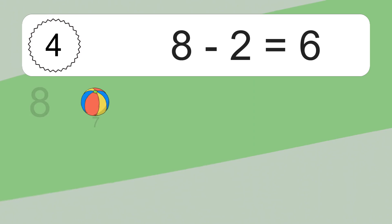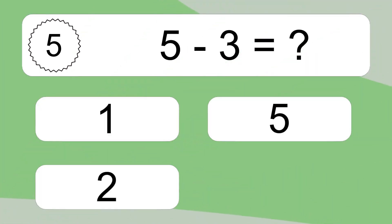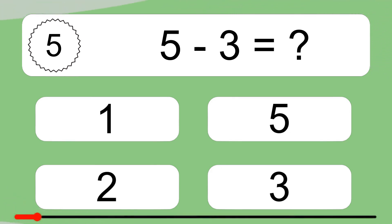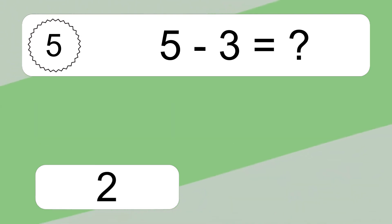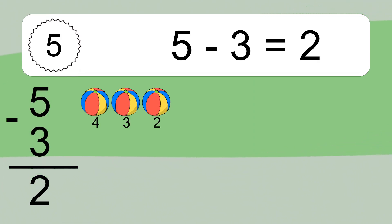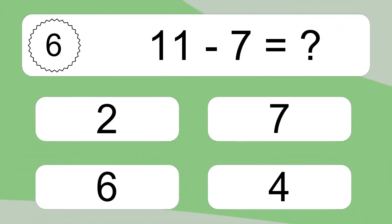8 minus 2 equals 6. Let's count it: 7, 6. 5 minus 3 equals what? 5 minus 3 equals 2. Let's count it: 4, 3, 2.